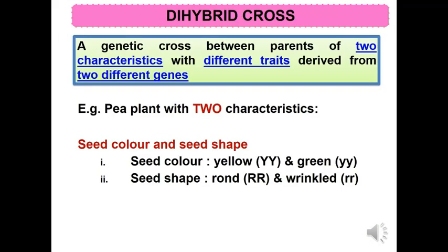A dihybrid cross is a genetic cross between parents of two characteristics with different traits derived from two different genes. For example, a pea plant with two different characteristics: seed color and seed shape.